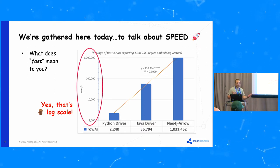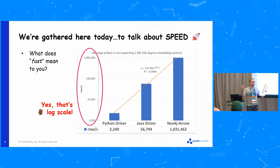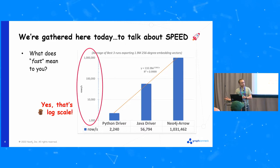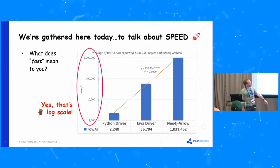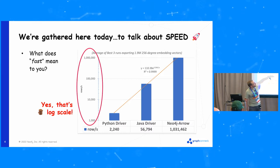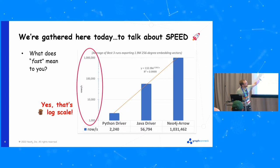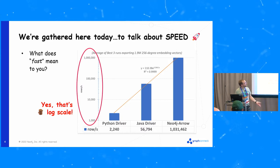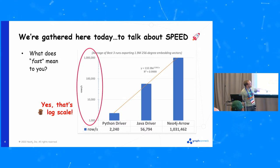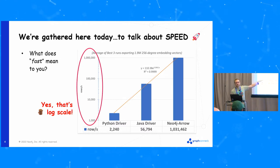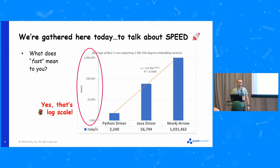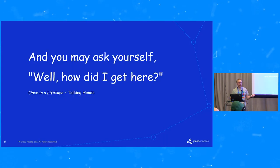Given a use case common in data science — I need to move a very large amount of feature vectors out of the graph into an ML platform like Vertex AI or SageMaker — you need to push data. These are numbers from moving just about 2 million 256-degree embedding vectors, a couple kilobytes each. This is a log scale chart showing orders of magnitude improvement over things like the Python driver or the Java driver.